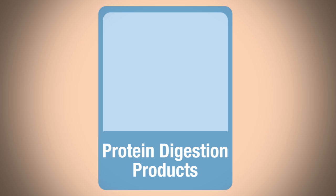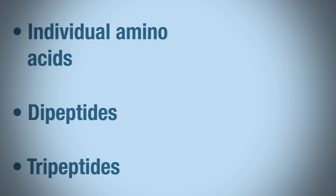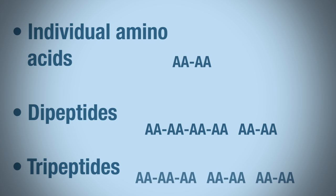When we digest a protein, the products we can get are individual amino acids, dipeptides, and tripeptides. A dipeptide means two amino acids joined, and a tripeptide means three. When proteins are digested, you can get these three products, and it's dependent upon the enzyme in question.